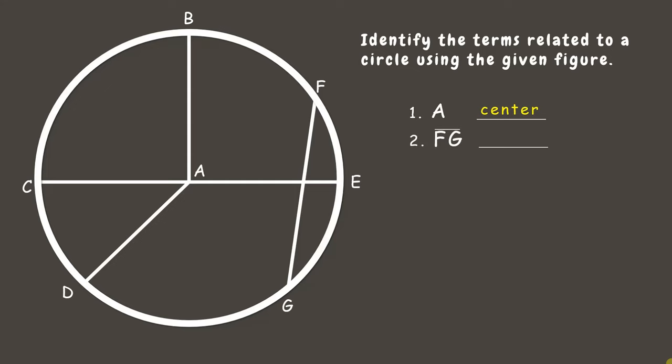Next is line segment FT, whose endpoints lie on the circle, but the segment does not pass through the center. So it's only called a chord.